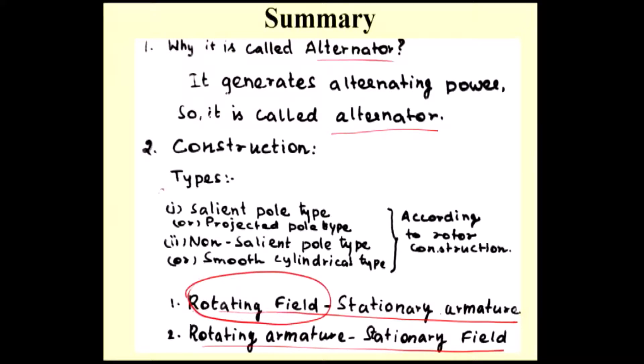Then according to rotor, there are two types of alternator. One is salient pole alternator or projected pole alternator, and another one is non-salient pole alternator or smooth cylindrical alternator.